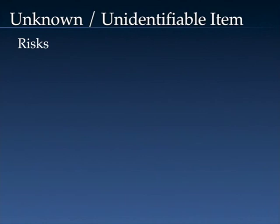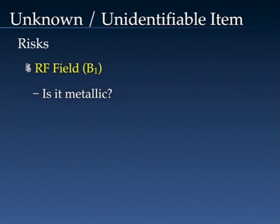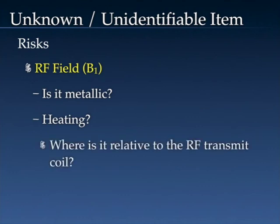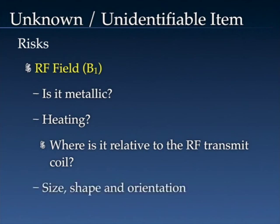There is also exposure to the B1 or RF field. As with any other magnetic field considerations, is it metallic? Because if it is, then it is conductive — and that's probably a given even if it's not ferrous. Would heating be of concern? That's going to depend on its location within the volume of the RF transmit coil, as well as its size, shape, and orientation. SMRT members have access to additional information on the SMRT website, including other videos and self-study materials, so if you have more detailed questions, please refer to that material.